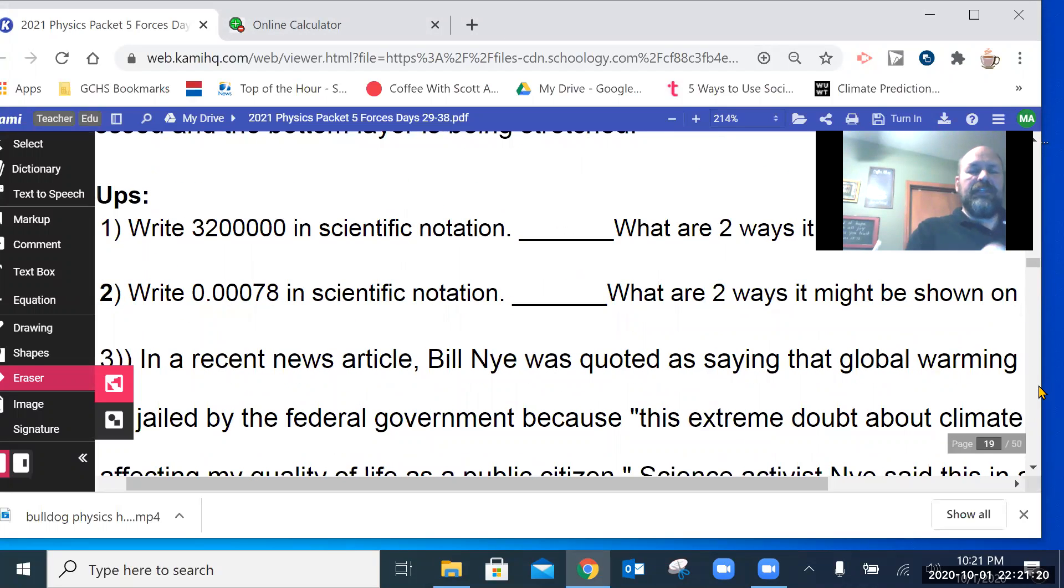Write that number in scientific notation. So I start off with the decimal point there and I want to make this into a number between one and ten. So we move this point one, two, three, four, five, six places.